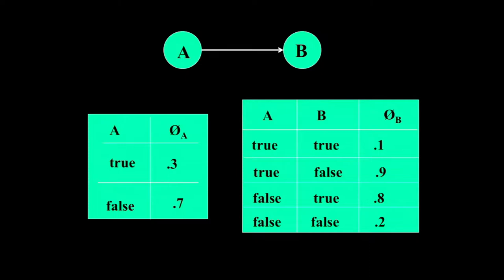First: how do we compile using variable elimination? Here's a network that has two variables A and B, and here are the CPTs for that. Think of this as a symbolic version of variable elimination. We're going to replace the numbers in the CPTs by expressions — think of them as circuit fragments.